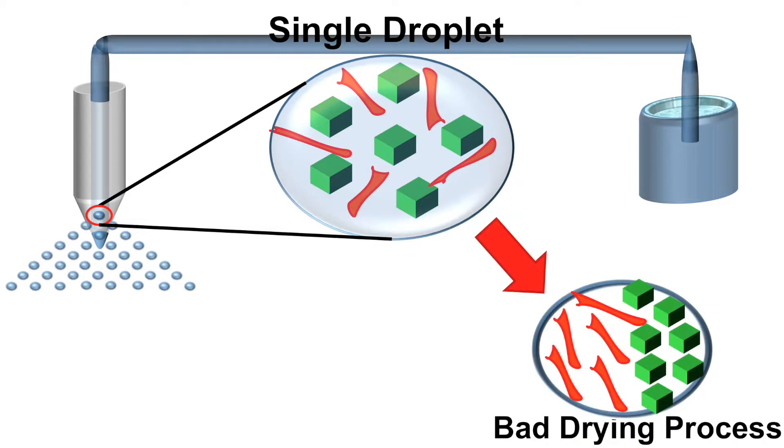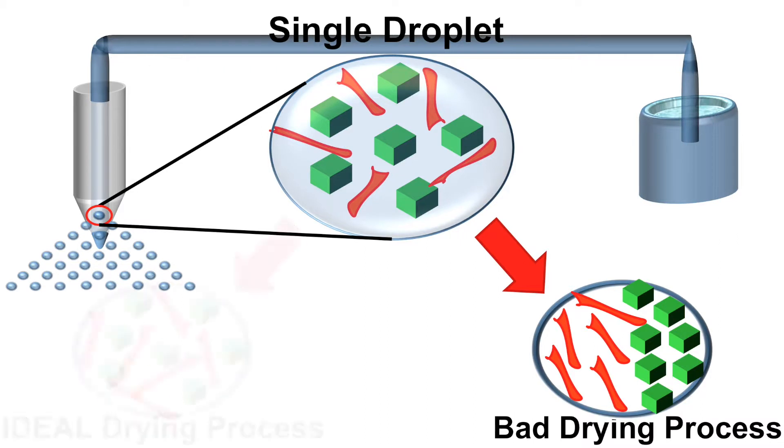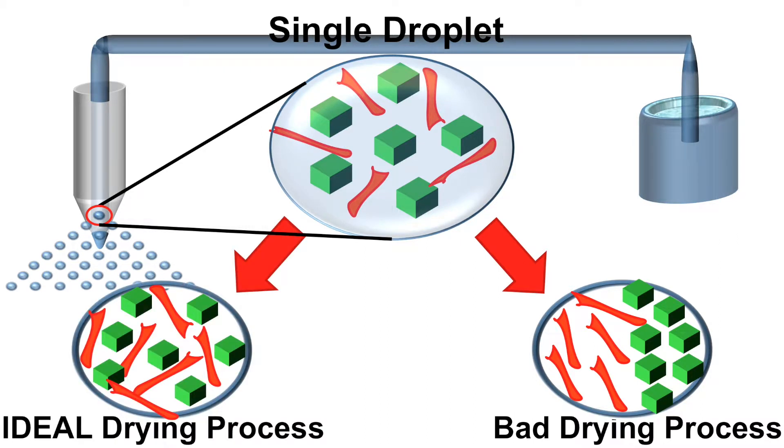But this is a liquid. I want something solid so I can press it into tablets — that's easier to use. So I need to dry out this liquid droplet. If I have a bad drying process, I get phase segregation between polymers and crystals in one particle. But I don't want that. I need to provide an ideal drying process so I have a homogeneous mixture between crystals and polymers, enhancing the solubility of the drug in the body so it can cure diseases faster, as fast as possible.